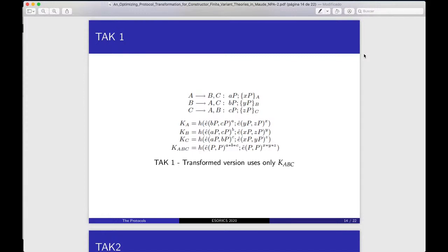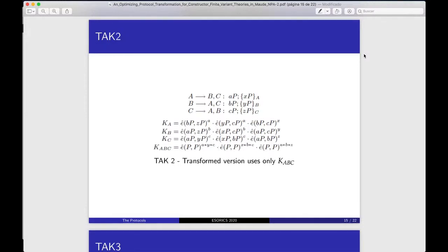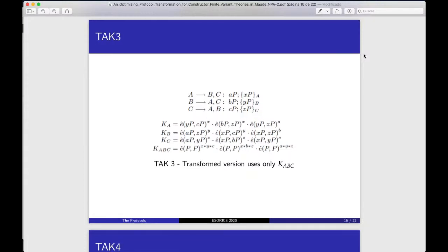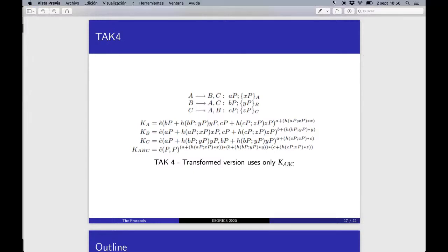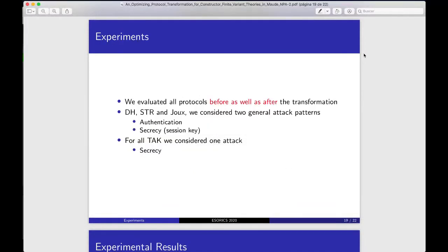In the next slide, I am going to explain the difference between the keys from all versions of the TAC protocol. In the TAC one, the key is a hash function with two bilinear pairing arguments. The second version, the key is three bilinear pairings concatenated with a dot symbol. The TAC three is similar to the TAC two, but with exchanging the exponents. The last TAC has the most complex key that needs to manage an exclusive or symbol.